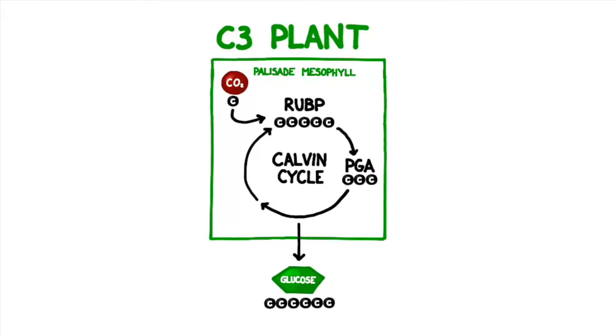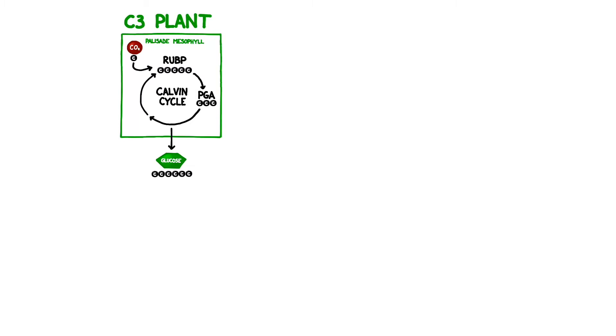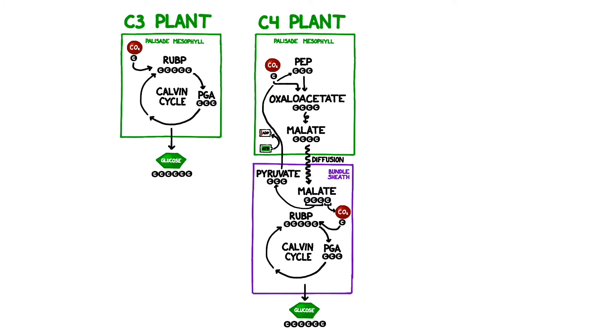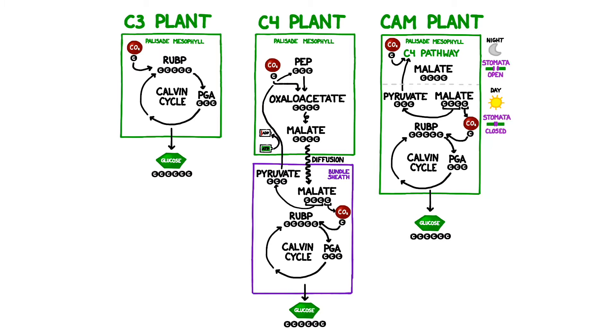Second, we should note that this video covers C3 photosynthesis. Desert plants use different variations of this process known as C4 and CAM photosynthesis. I have an entire video dedicated to the details of the C4 and CAM processes. Definitely check it out if that's what you're looking for. Okay, let's get started.